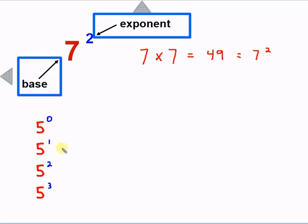Let's take a look at some of these others — our base and our exponent. Here we have a base of 5 and an exponent of 0. Any number to the exponent 0 is equal to 1. So 6 to the 0th power would be 1, 5 to the 0th power is 1, 2,507 to the 0th power is 1. Anything to the 0th power is 1.